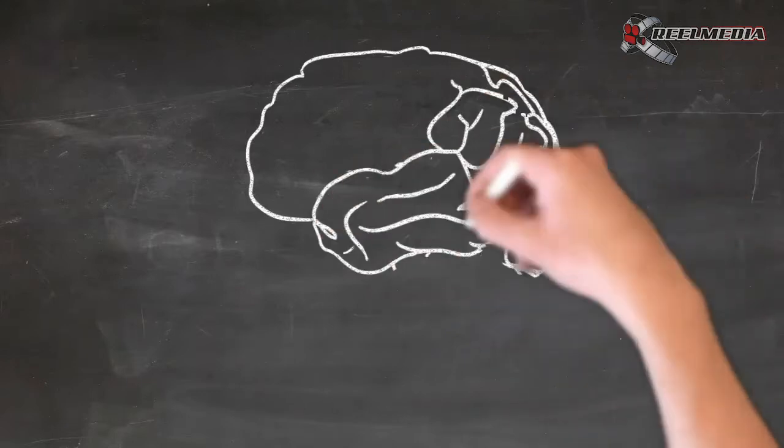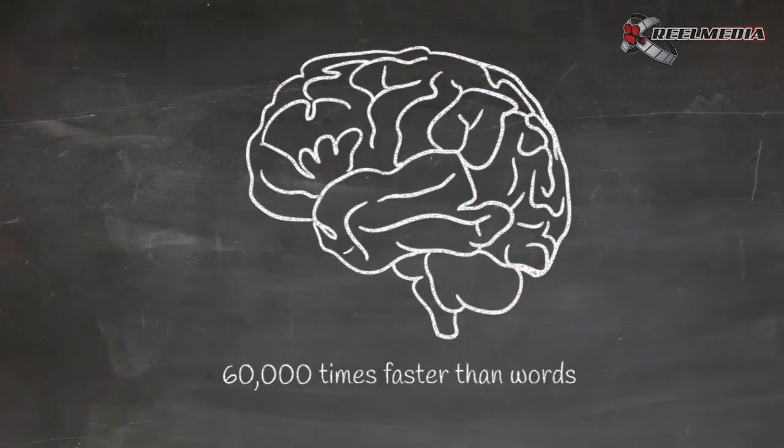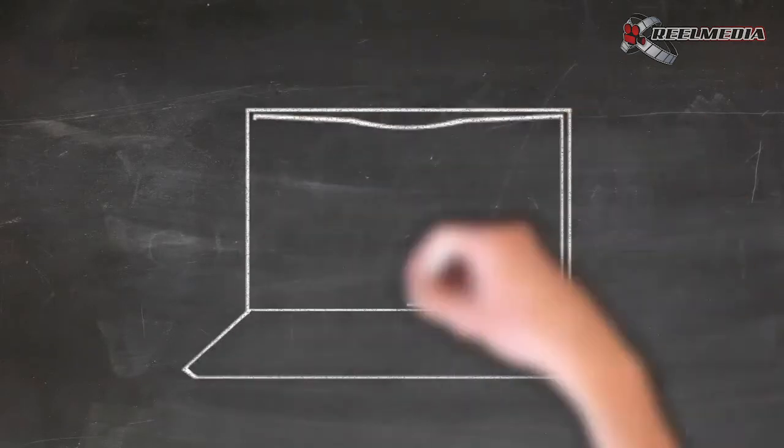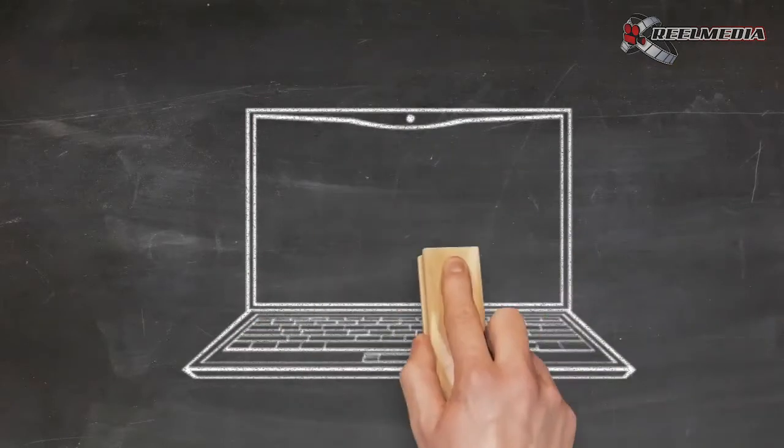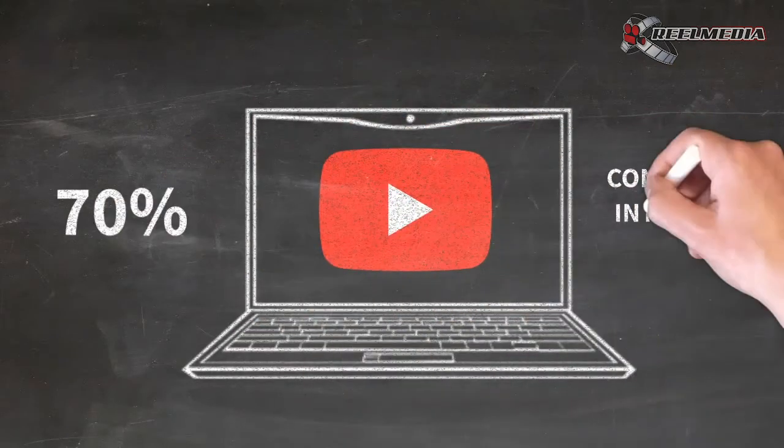The human brain processes images 60,000 times faster than words. So, it makes sense that this year, online video will make up over 70% of consumer internet traffic.